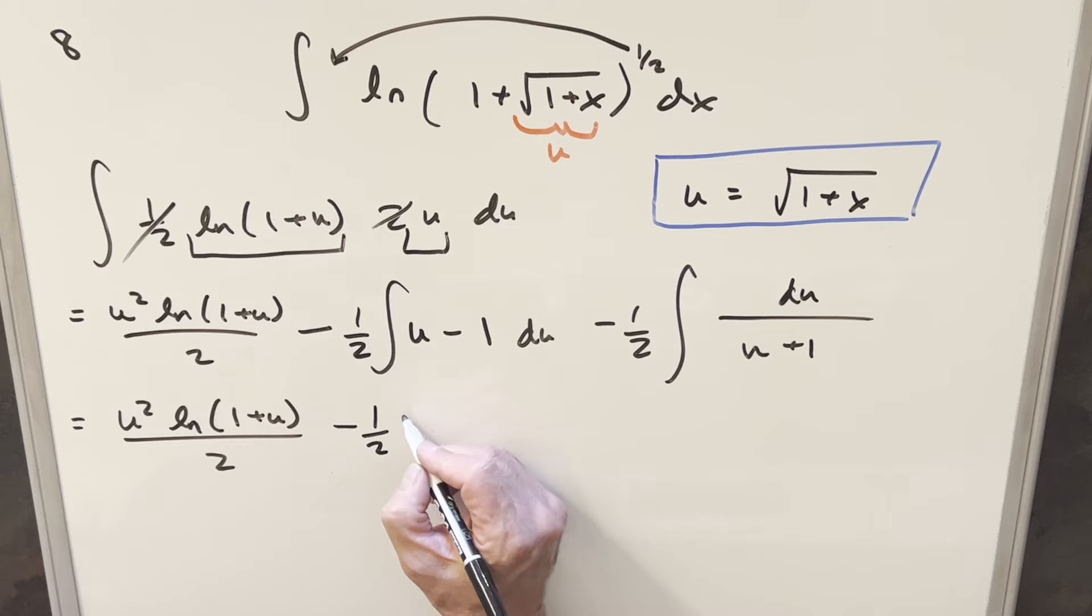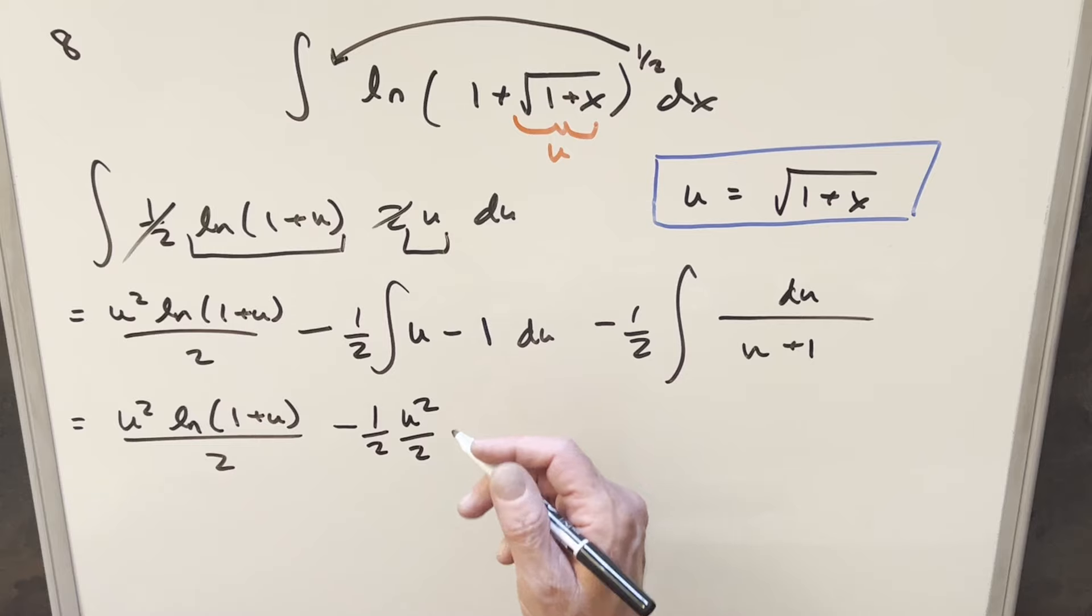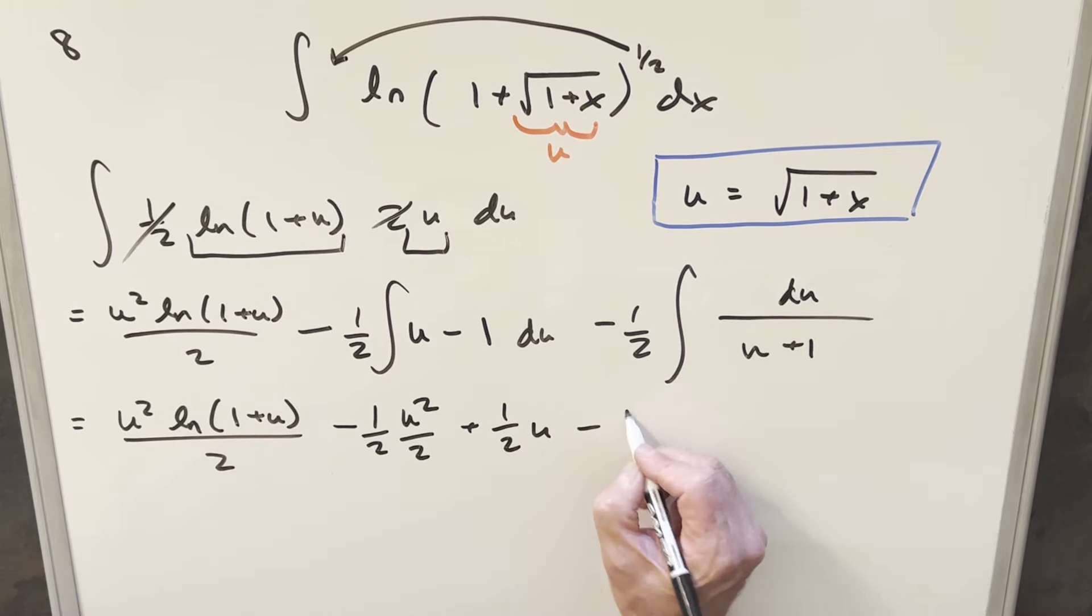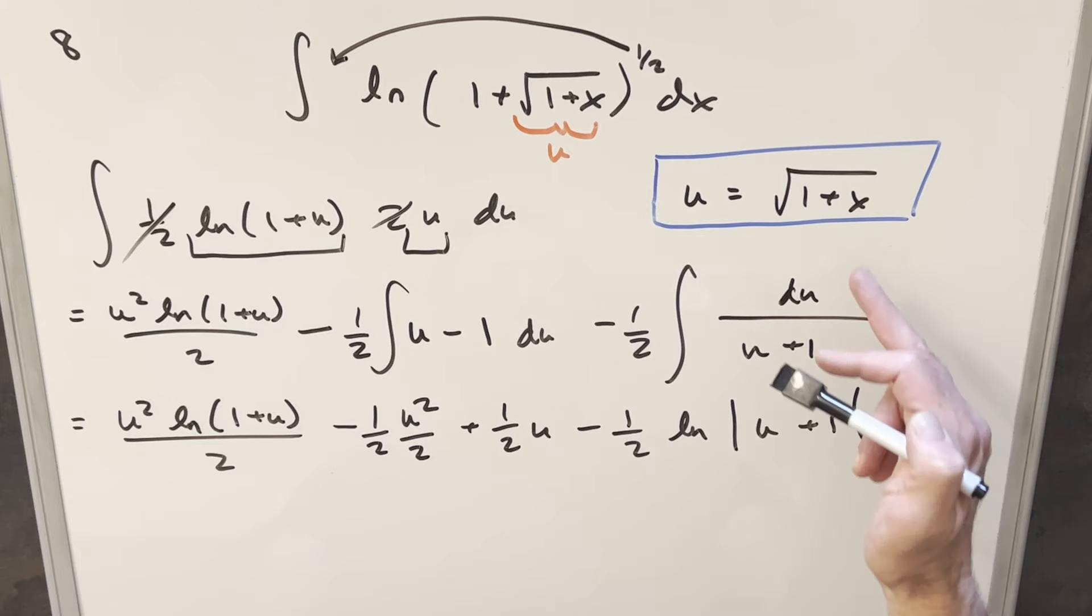Here, integrating u, that's going to be u squared over 2, distributing minus 1 half to minus 1 plus 1 half. Integrate, we get plus 1 half u, and then here, this is going to be minus 1 half. This will become natural log absolute value of u plus 1. And then at this point, we want to do some simplification. One thing I want to notice, this u plus 1 here, this is always going to be positive because our u is always positive, and we add 1 to it. So I'm just going to drop absolute value here.